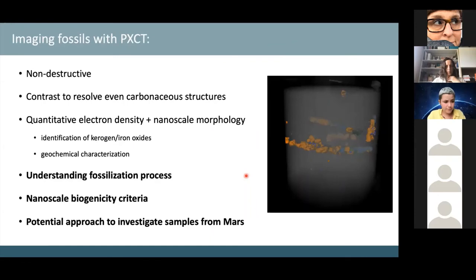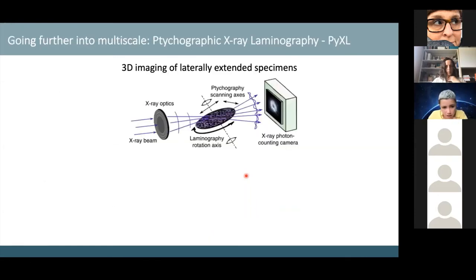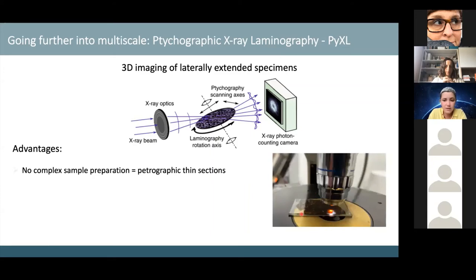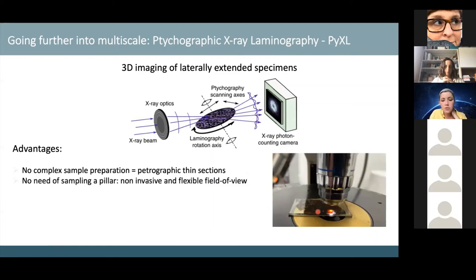Now in my postdoc, we are exploring laminography for 3D imaging of laterally extended specimens. A major advantage is that we don't need pillar preparation — we go directly from petrographic thin sections, which is faster, easier, and cheaper. It's also non-invasive and allows a flexible field of view, not restricted to a 15-micron pillar. The trade-offs are lower resolution than normal ptychography CT and only semi-quantitative electron density information.